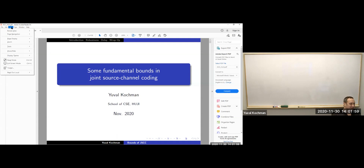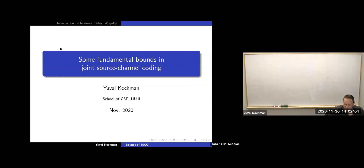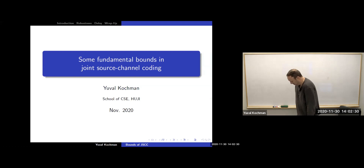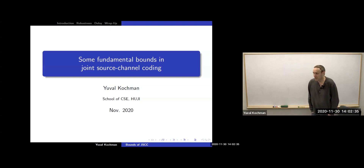Thank you. It's a pleasure to talk in this forum — I think the last time I did that was nine years ago. It's a pleasure to use the new Zoom room; it's almost the same pleasure as talking in front of you physically. I'm going to talk about some fundamental bounds in joint source-channel coding, which is my favorite sub-area of information theory. It's based in part on new results with Orr Obenklich and Yuri Pulyansky from MIT, but it will be a tutorial talk, so we'll get to the new stuff only towards the end.